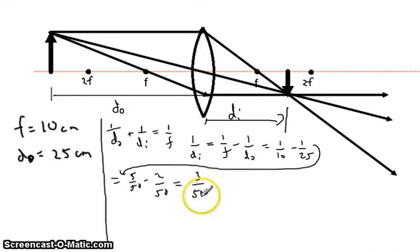We have to remember that 3 over 50 is equal to 1 over DI. So that means that DI is going to be 50 divided by 3, and that turns out to be about 16.7 centimeters.